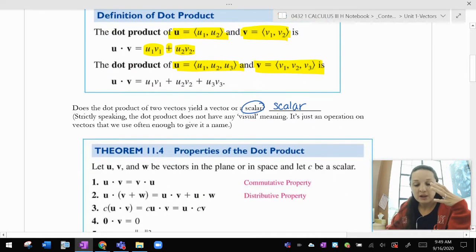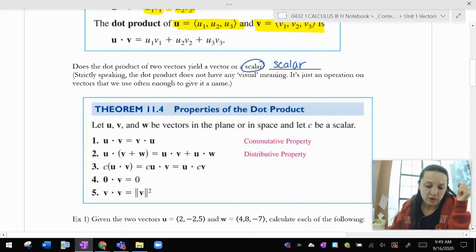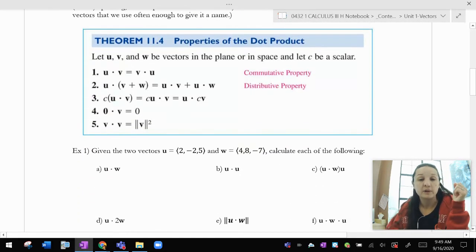So strictly speaking, the dot product does not have any visual meaning. If you want to say, well, what does that number mean? Not really anything I can explain in a simple sense. It's just an operation on vectors that we use often enough to give it a name. I'm recording this at school, hence the bells.